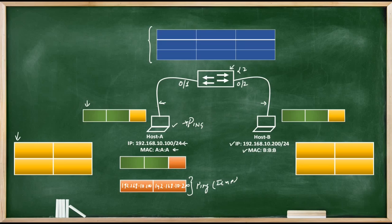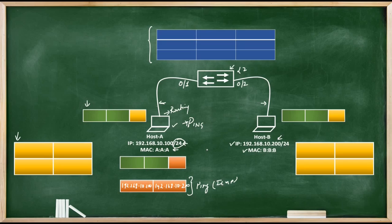When Host A generates the ping packet, it needs to route it towards Host B. Routing starts from the host itself. As a first step, Host A will check whether the destination address of the ping packet, 192.168.10.200, is part of its own network. It can calculate this using the subnet mask /24, through which Host A comes to know that Host B is part of its own network, which is 192.168.10.0/24. If the destination is in the same network, Host A forwards the packet out of its ethernet interface.